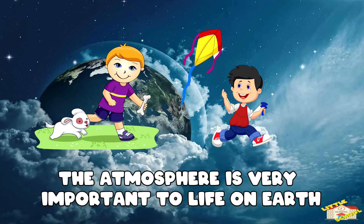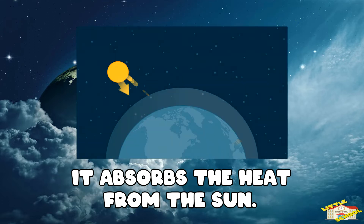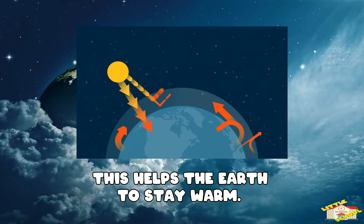The atmosphere protects Earth like a big blanket of insulation. It absorbs the heat from the Sun and keeps the heat inside the atmosphere. This helps the Earth to stay warm.